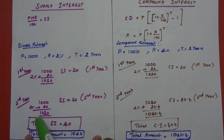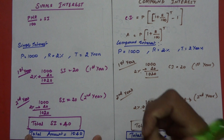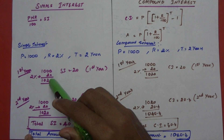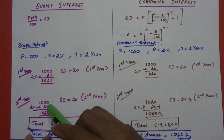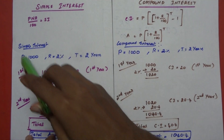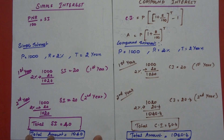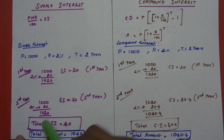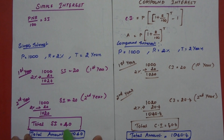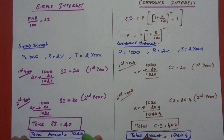So the amount is 1,020. Now, in the second year, the amount of interest is calculated on the same principal of 1,020. That's the simple interest — the total interest is 40.